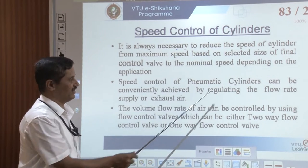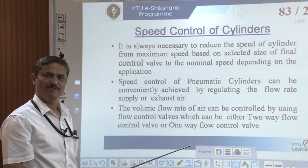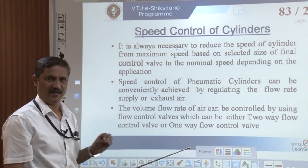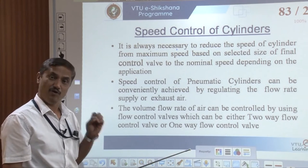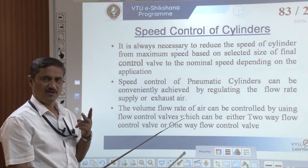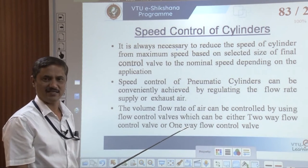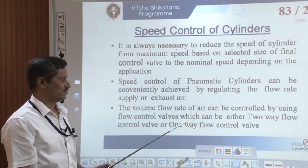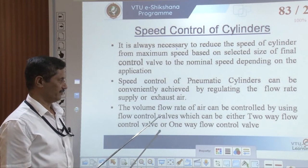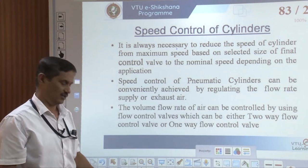The speed control of pneumatic cylinders can be conveniently achieved by regulating the flow rate of air, which is done through a valve called a flow control valve. We can control in two ways: one is supply air control and the other is exhaust air control. The volume flow rate of air can be controlled by using these control valves.